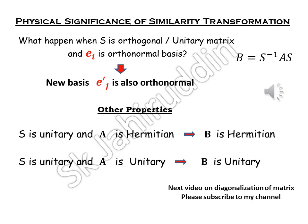And the matrix S by which you are transforming your A matrix is an orthogonal or unitary matrix. What happens? What happens is that your new basis, the primed basis, will also be orthonormal, means orthogonal or unitary transformation preserves the orthonormality of your basis vectors.